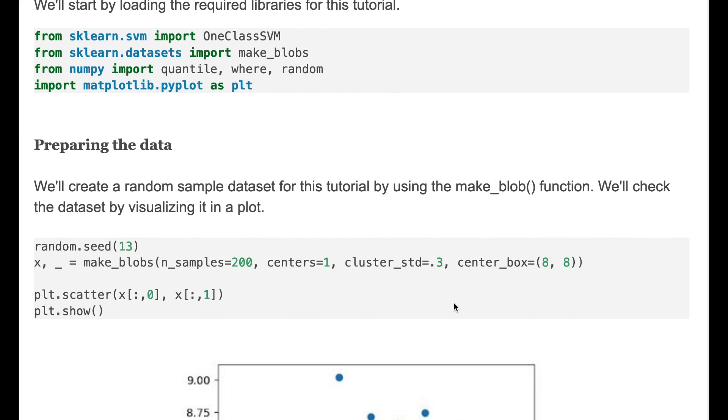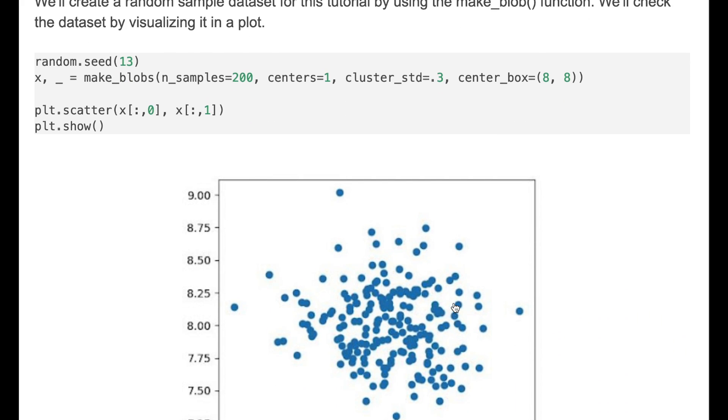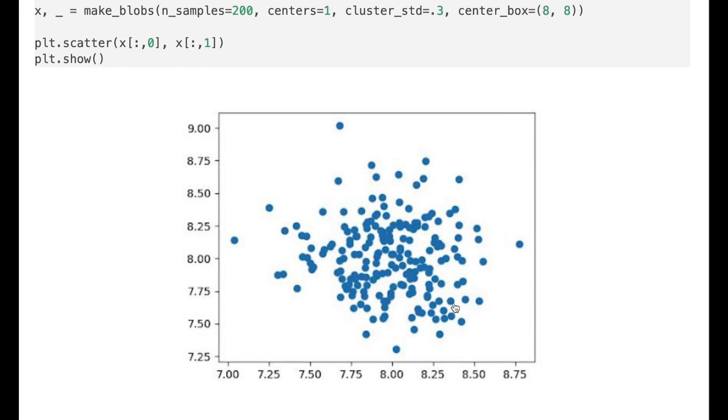First we'll prepare a random sample dataset for this tutorial by using the make_blobs function and we'll check the dataset by visualizing it in a plot. Here is the code how to generate the data and then visualization in a scatter plot.